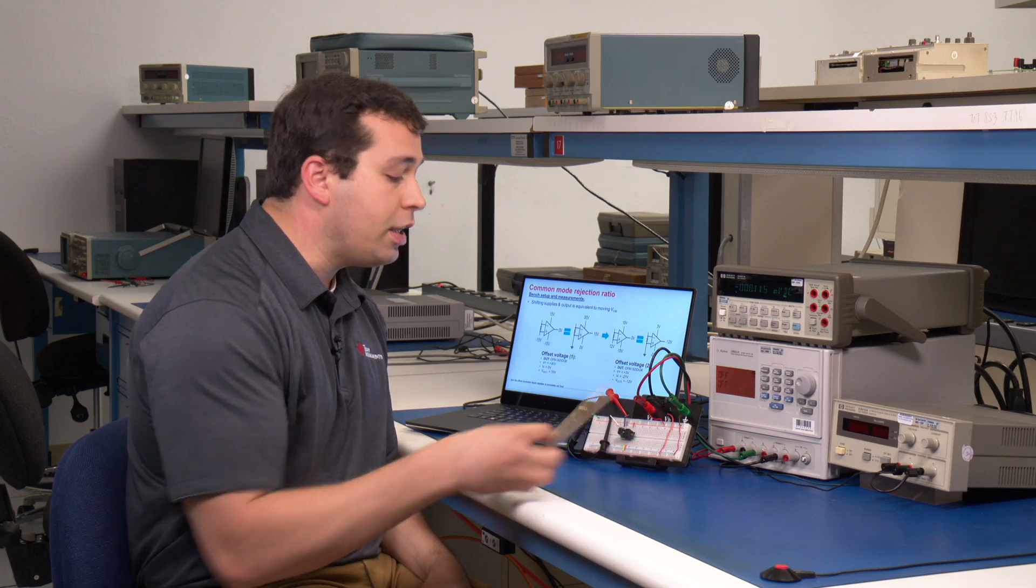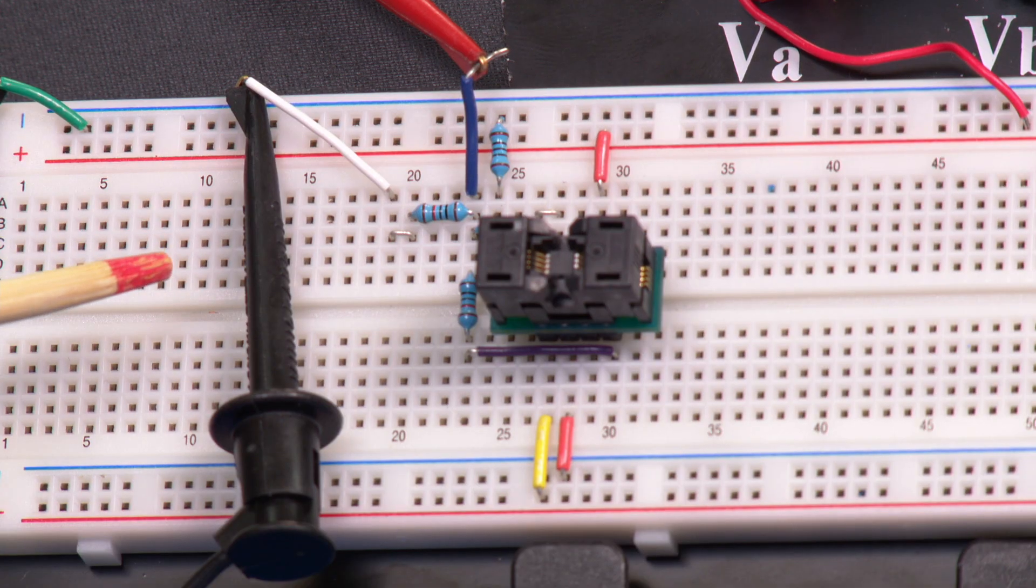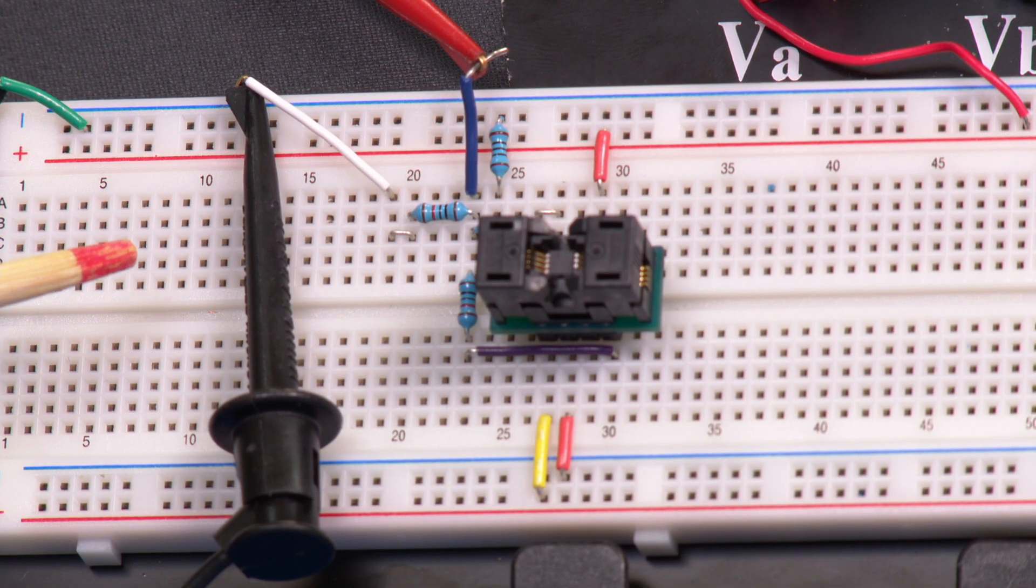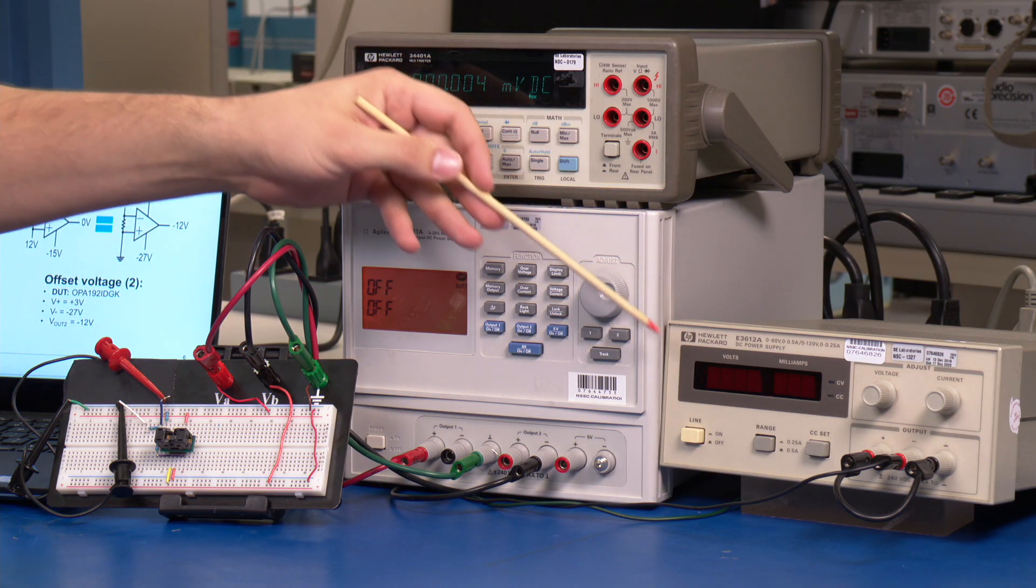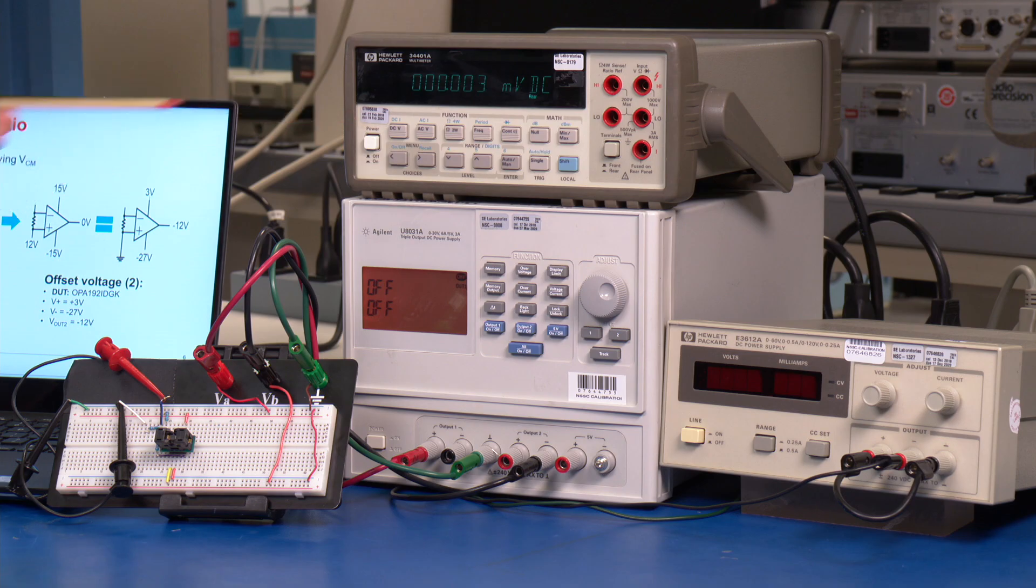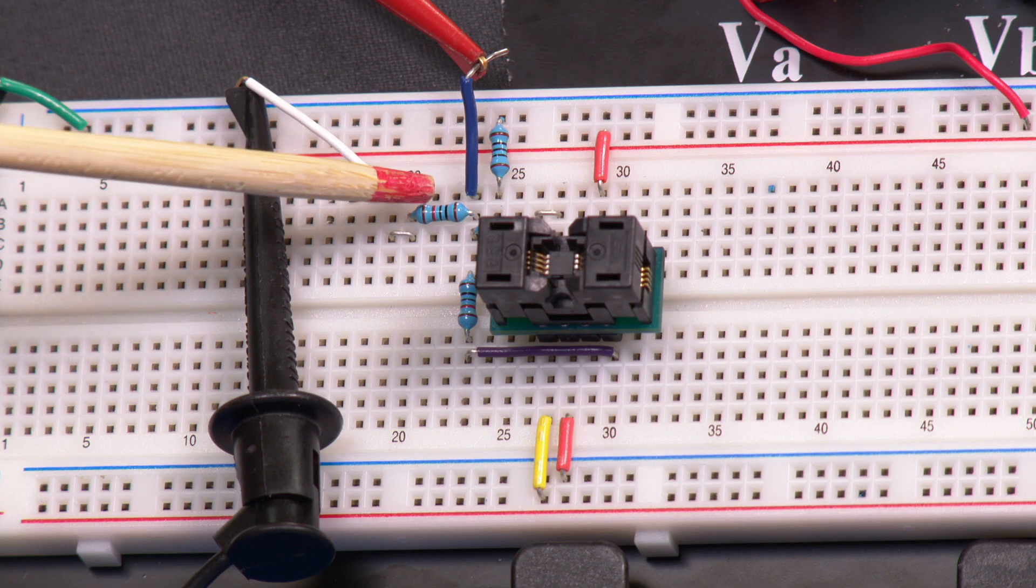In this example, we will use the OPA 192. In addition, we will make use of a universal prototyping board known as a breadboard. In addition, we will use two power supplies and a digital multimeter to read the output voltage of the false summing junction circuit.